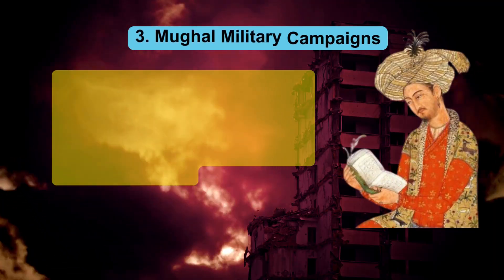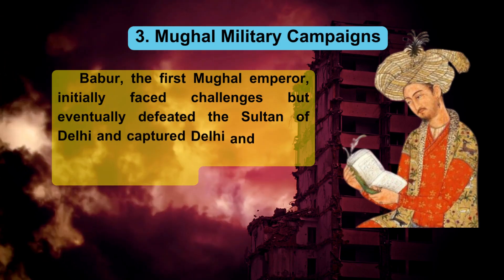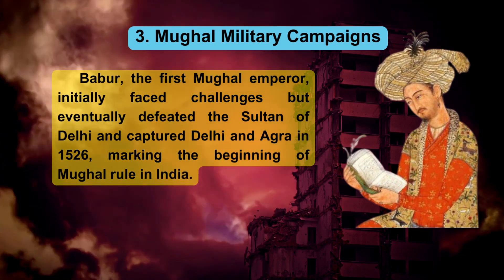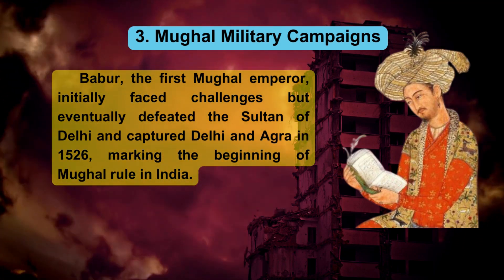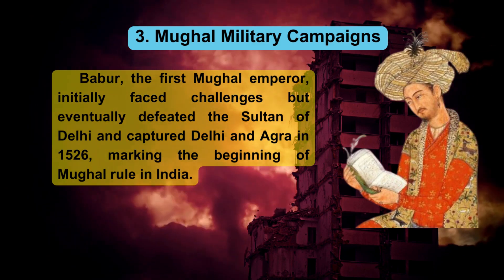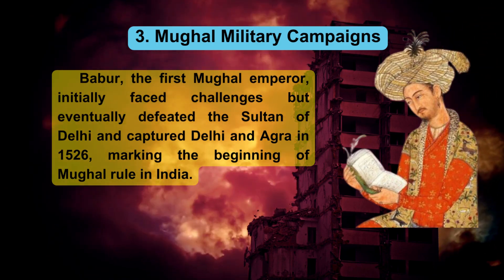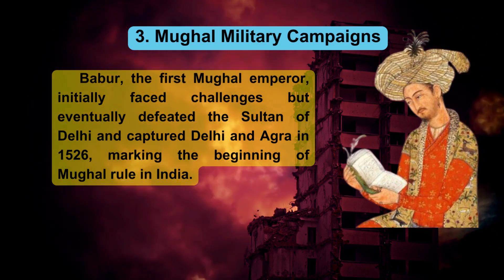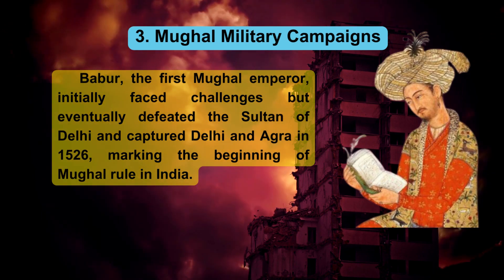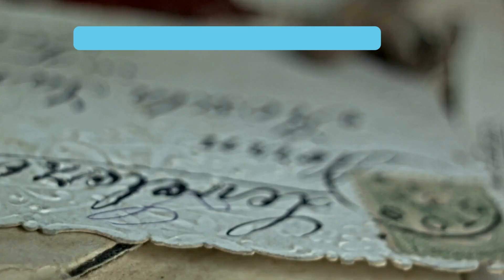3. Mughal Military Campaigns. Babur, the first Mughal Emperor, initially faced challenges but eventually defeated the Sultan of Delhi and captured Delhi and Agra in 1526, marking the beginning of Mughal rule in India.